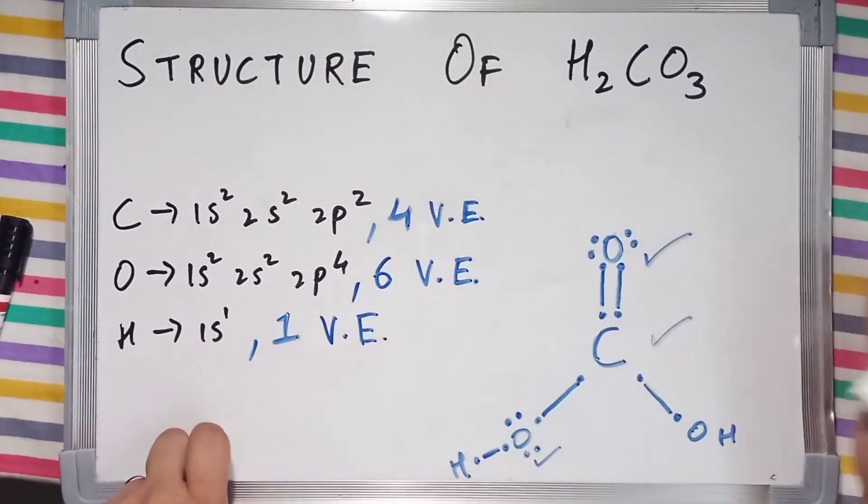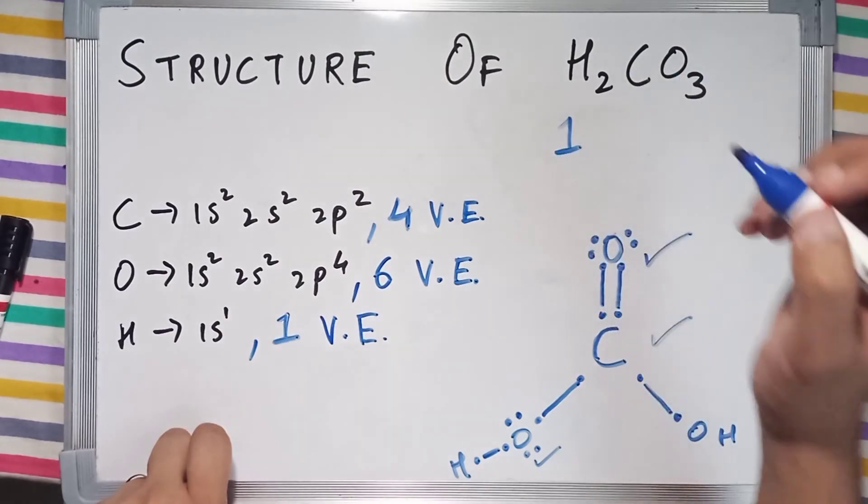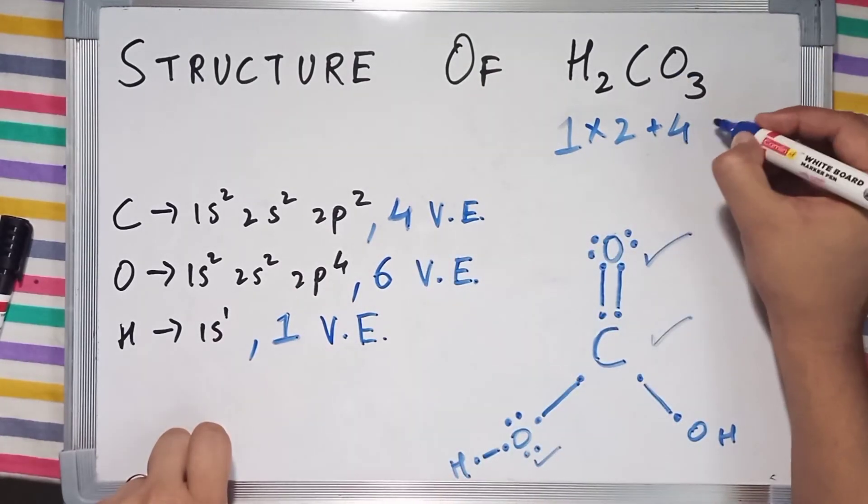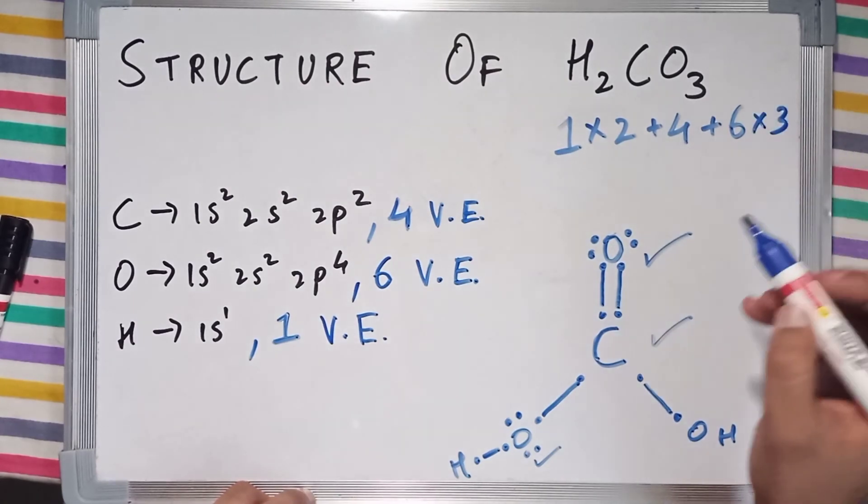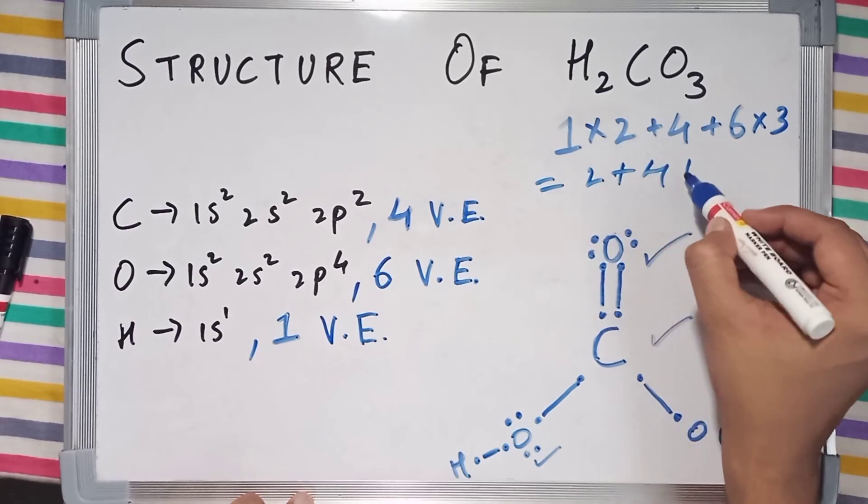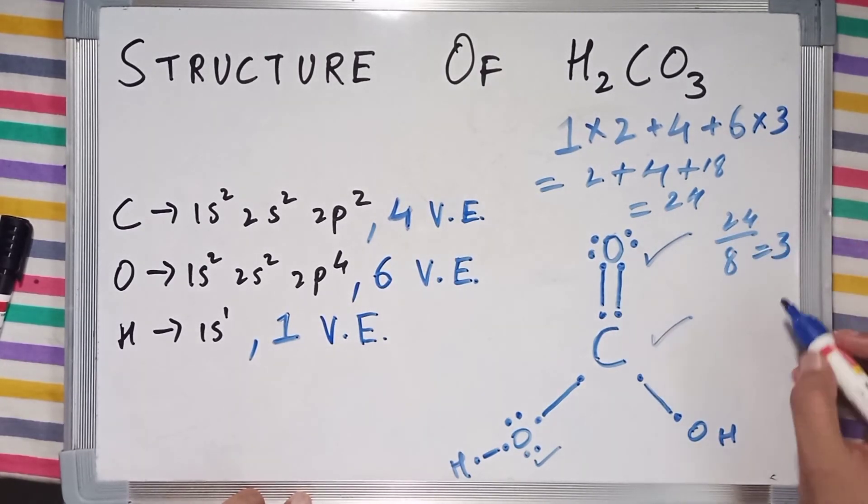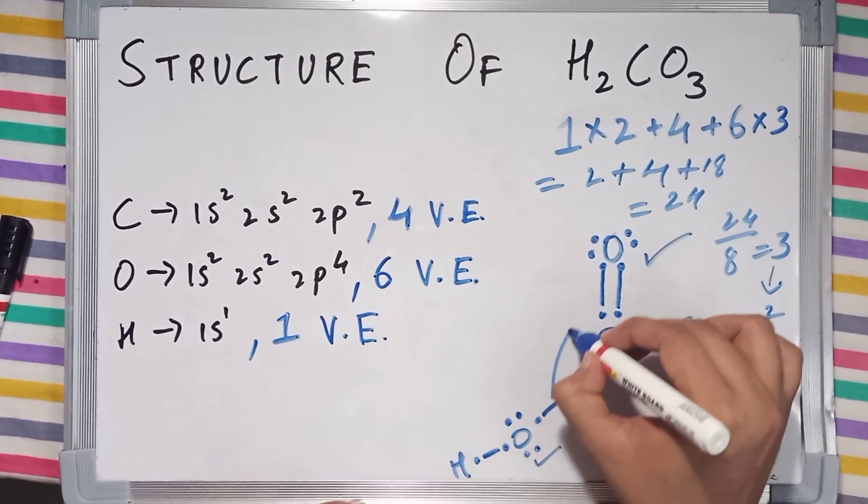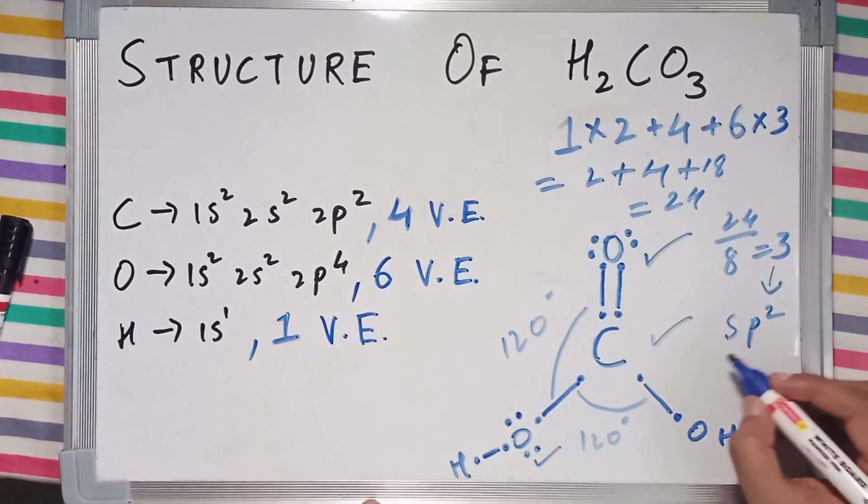If you want to calculate the hybridization of carbonic acid, let's do it. Number of valence electrons: hydrogen is 1 times 2 atoms equals 2, plus carbon has 4 valence electrons, plus oxygen has 6 valence electrons times 3 atoms. This gives us 2 plus 4 plus 18 which equals 24. Now divide 24 by 8 which gives us 3. This 3 corresponds to SP2 hybridization, and we can derive that the molecule will have 120 degrees angle between each bond and will be a trigonal planar molecule.